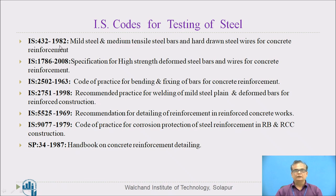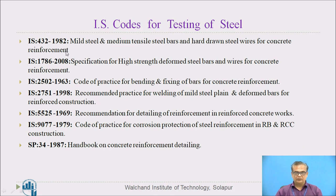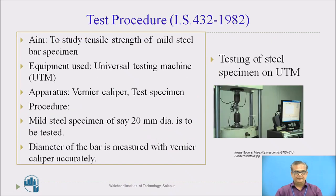IS 432-1982 is the code for mild steel and medium tensile steel bars and hard-drawn steel wires for concrete reinforcement. Today, we are dealing with this particular IS code as we are studying tensile test on mild steel bars today. Let us see the test procedure.